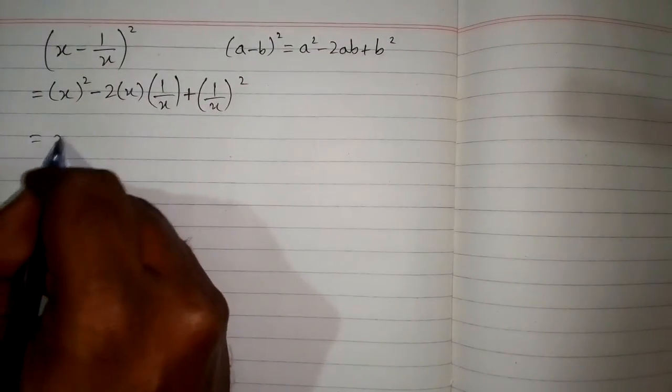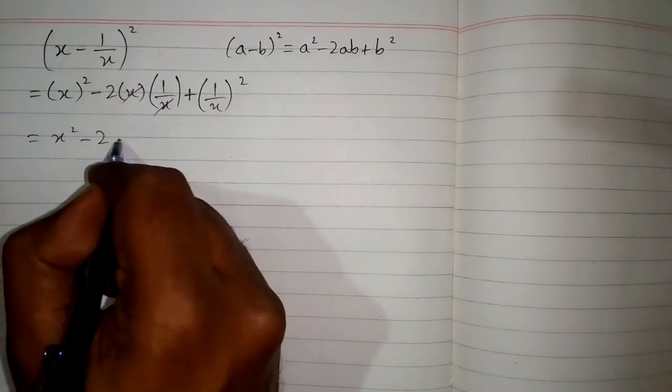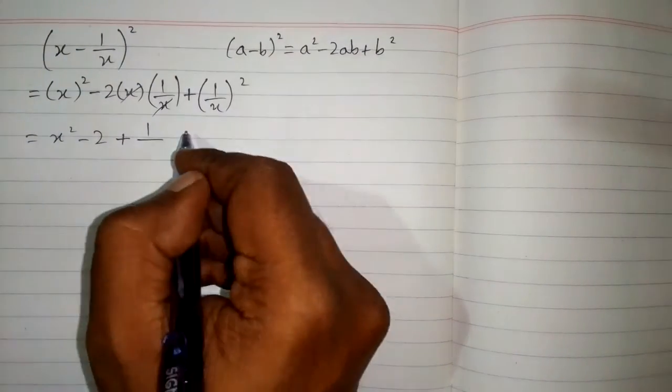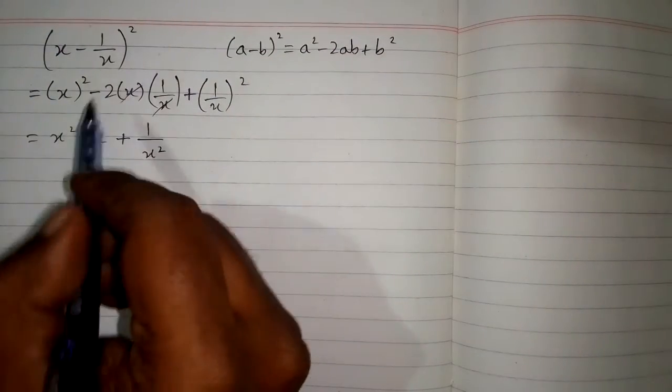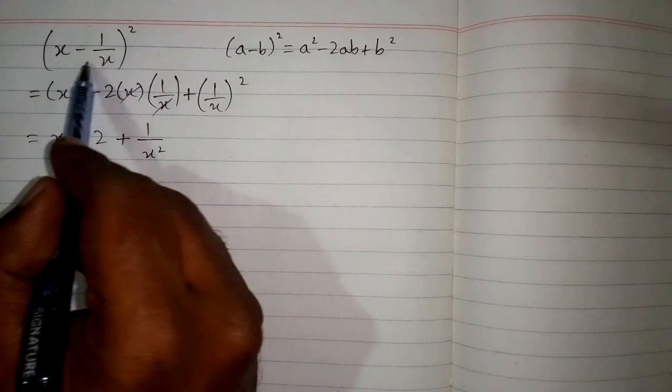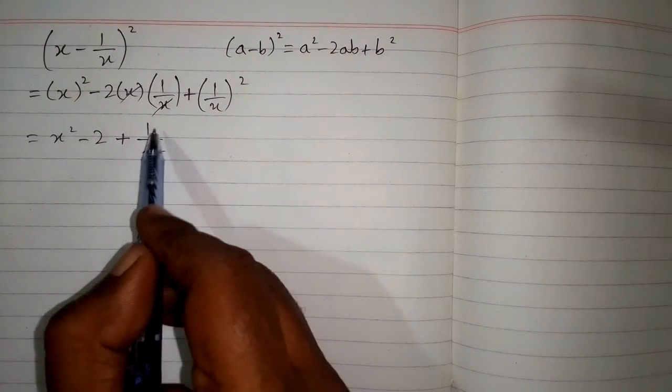Now square of x is x square and we can cancel this x, so we have 2 plus 1. Square of 1 is 1 and square of x is x square. So the square of x minus 1 upon x is x square minus 2 plus 1 upon x square.